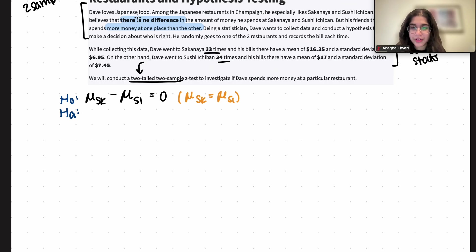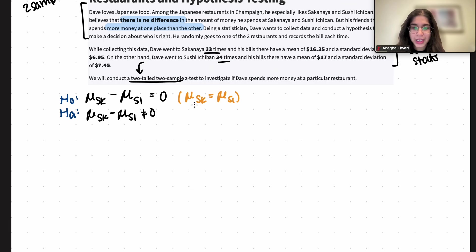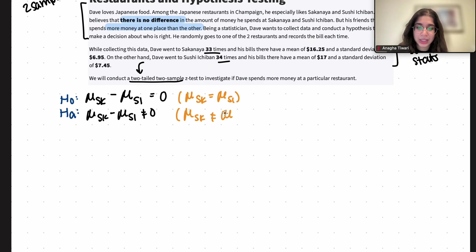And then your alternative is that there is a difference — you spend more money at one place than the other, but we don't know what place. So it's μ_sk minus μ_si does not equal zero. You can also write this as μ_sk does not equal μ_si.